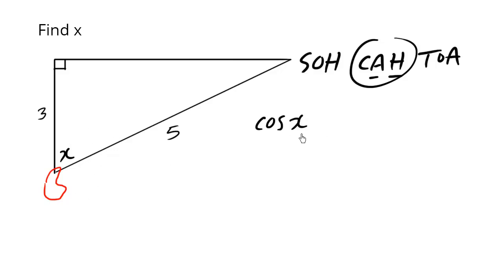So cosine of some angle, these belong together, equals the adjacent over the hypotenuse. Not the hypotenuse over the adjacent. It equals the adjacent, the numerator, over the hypotenuse. So we have three over five.